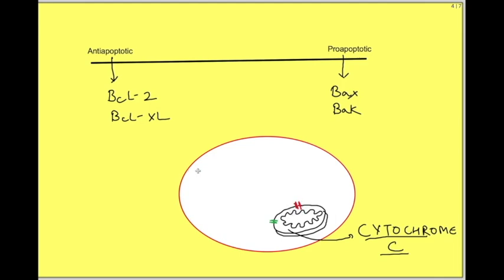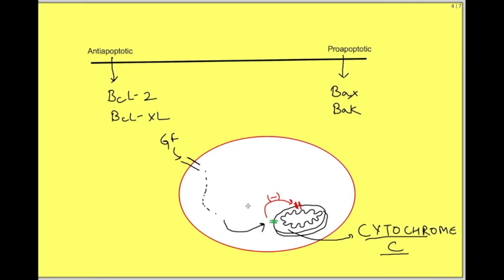Normally, the anti-apoptotic proteins keep the pro-apoptotic proteins under check. Whenever growth factors are present, they act on receptors on the cell membrane and downstream events activate BCL2 and BCLXL, which keep the pro-apoptotic proteins inhibited. When these growth factors are absent, this check is affected and the pro-apoptotic proteins become important.